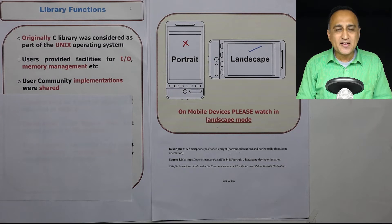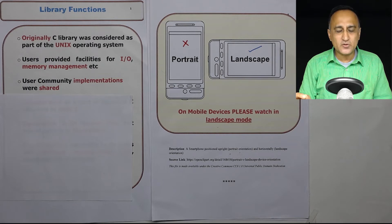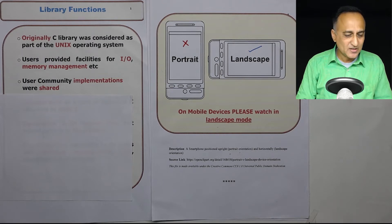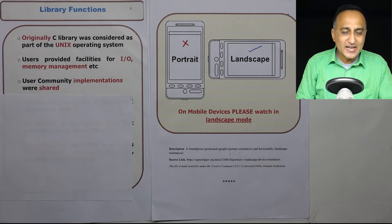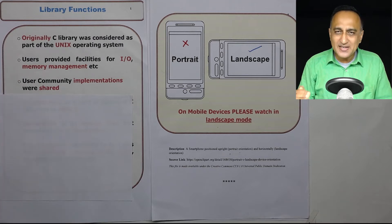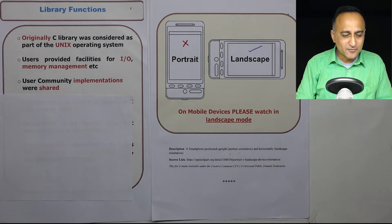C and Unix share a very close relationship. In fact, the first kernel of Unix — which was written using a high-level language — was written in C. So originally the C library was simply considered to be a part of the Unix operating system.